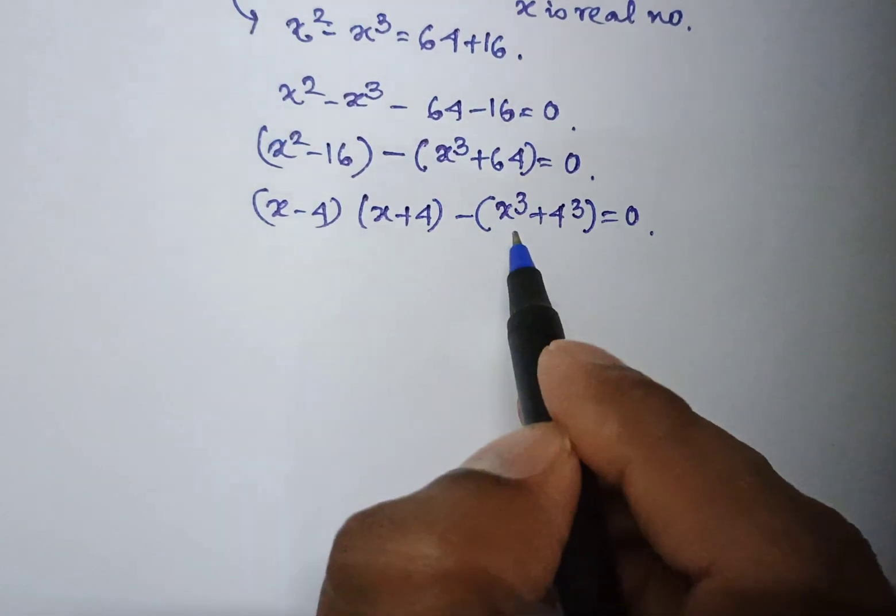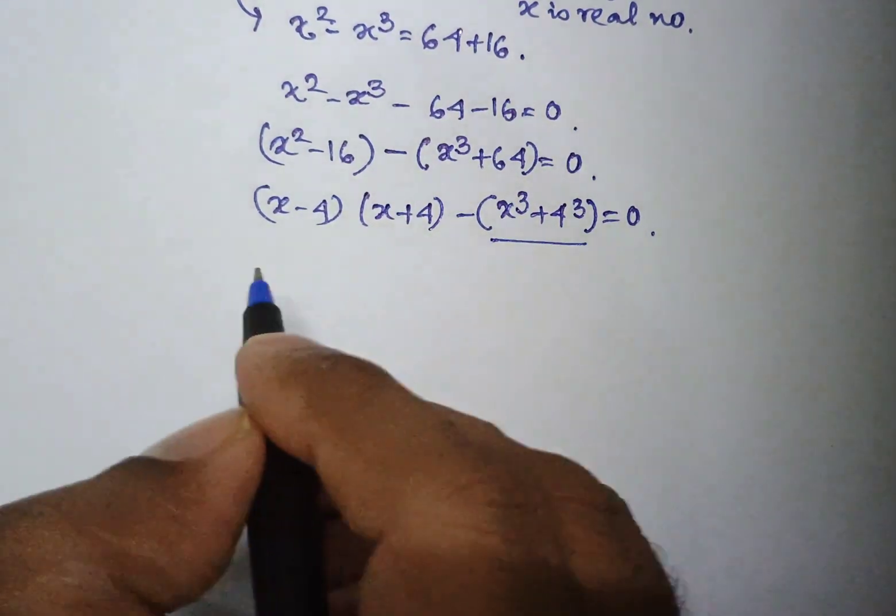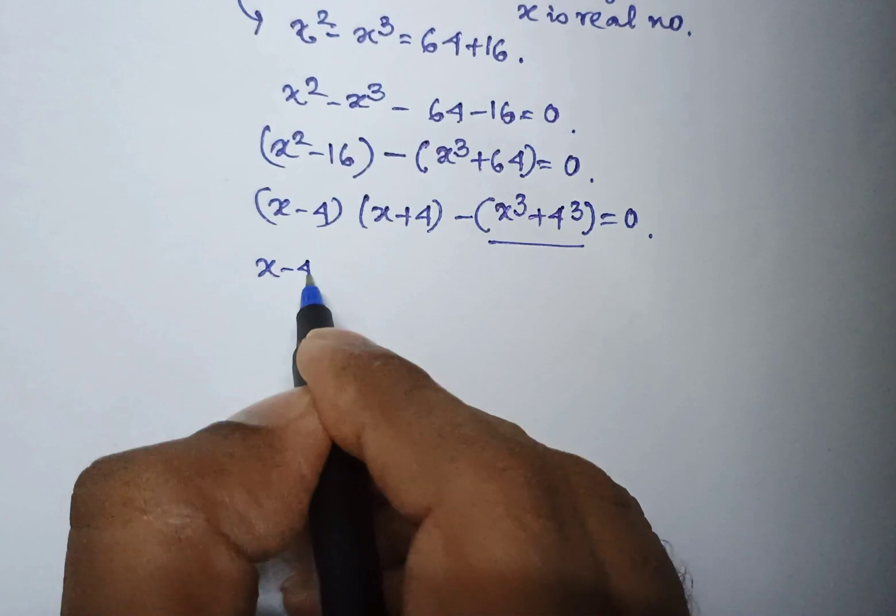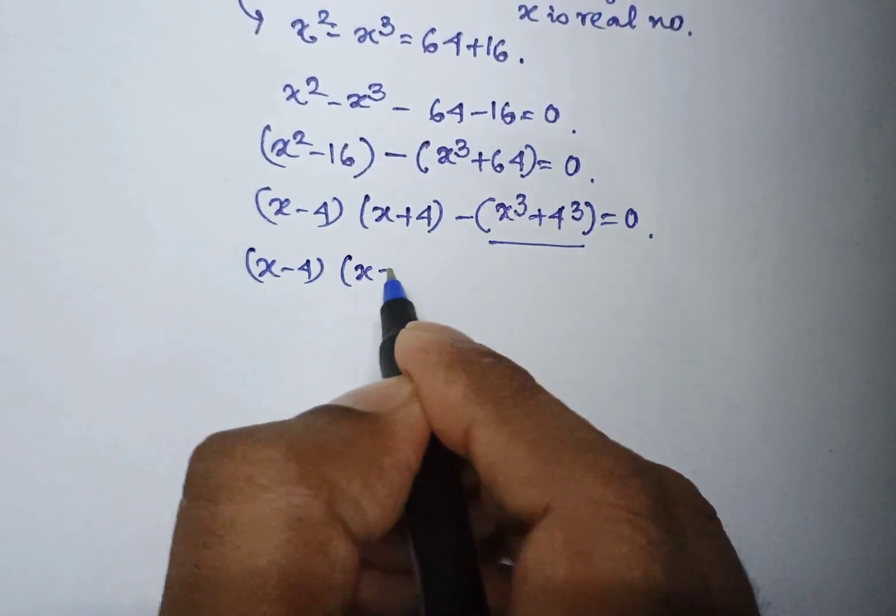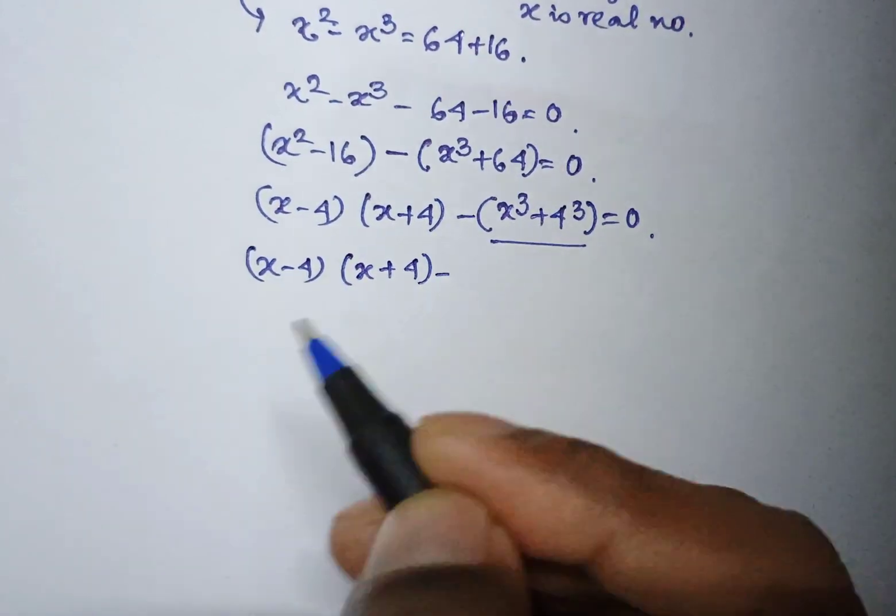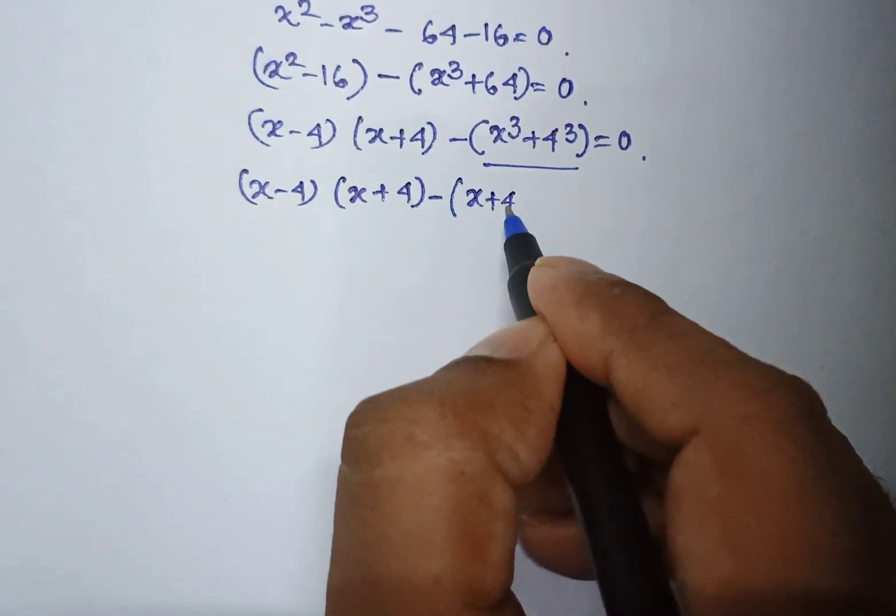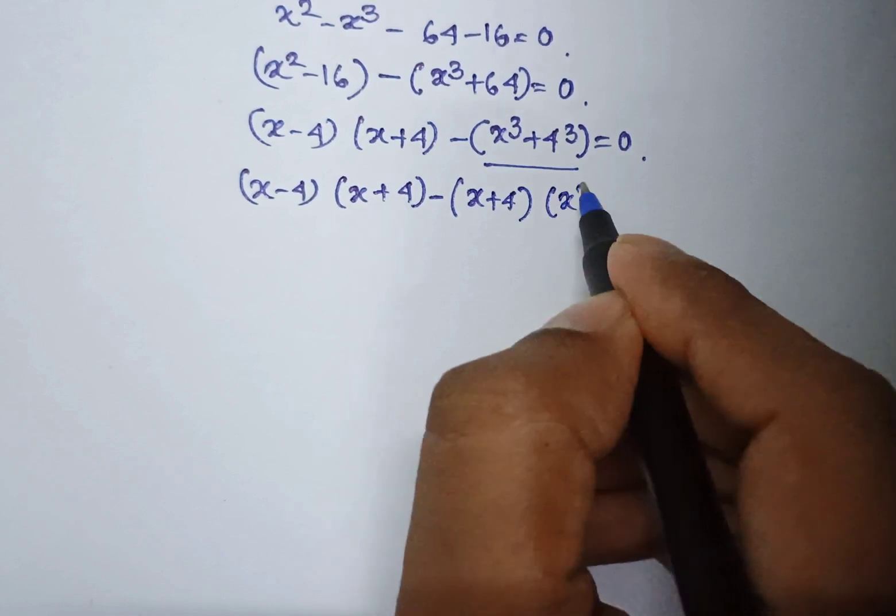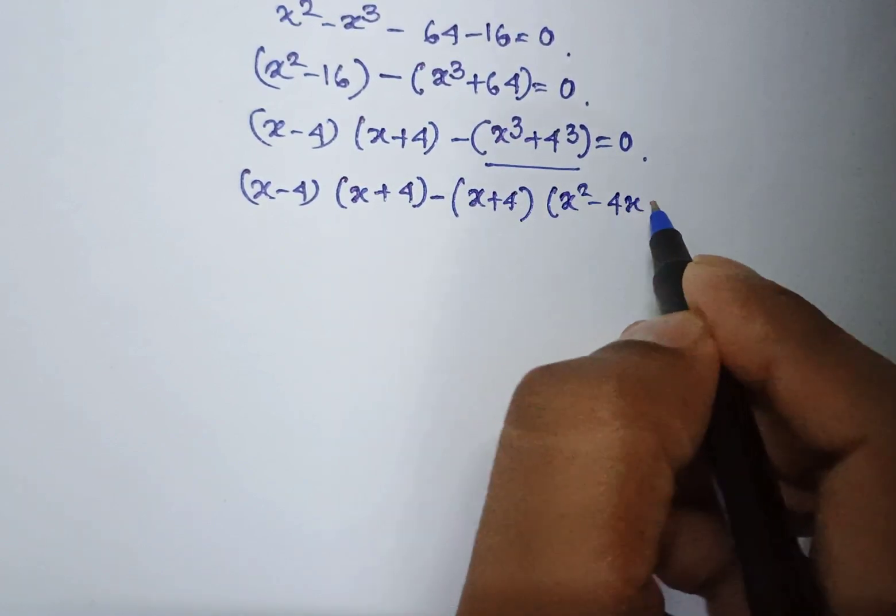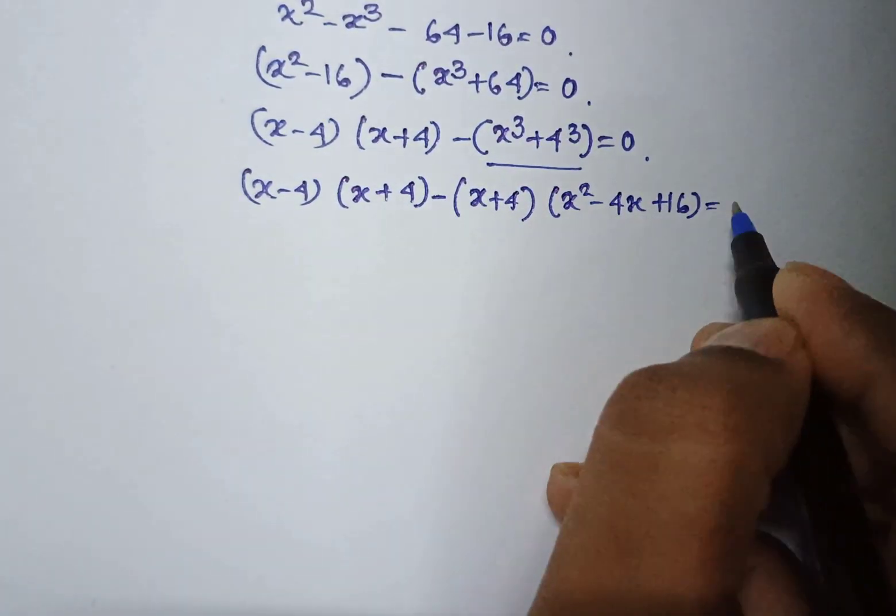We shall apply the formula of a cube plus b cube here. Here it becomes x minus 4 into x plus 4 minus a cube plus b cube is a plus b into a square minus ab plus b square equal to 0.